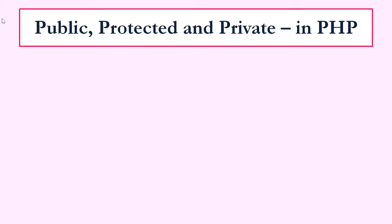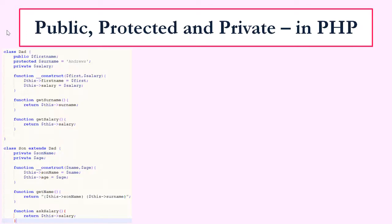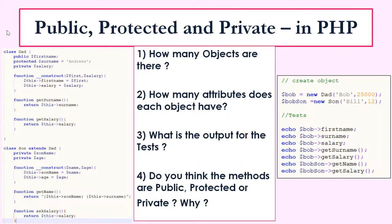Hopefully you've now got a better idea of what public, protected, and private access rights are in PHP. We are now going to look at some code and I'm going to ask you some questions so you can consolidate the information. Stop the video, try and answer them, and then we'll go through them together.